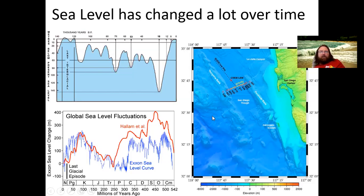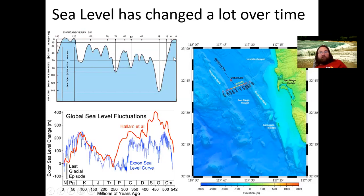Changes in ice volume and activity at mid-ocean ridges can affect sea level by several hundred meters — that is not a small number. Locally, this means the Coronado Islands were probably connected to the mainland during the last glacial period. We would have had a lot of coastline exposed that is not exposed now, which was flooded as sea level rose during the transition from the glacial maximum to the present day.